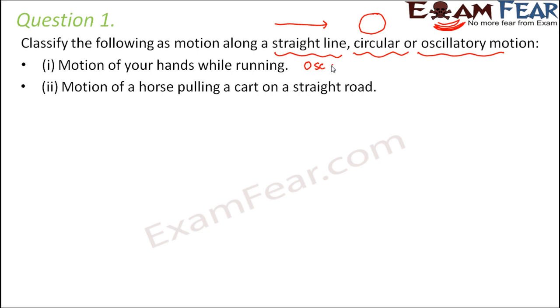Motion of a horse pulling a cart on a straight road. Now since the road is straight, obviously the horse will be pulling the cart also on the straight road, which is going to be a rectilinear motion or straight line motion.